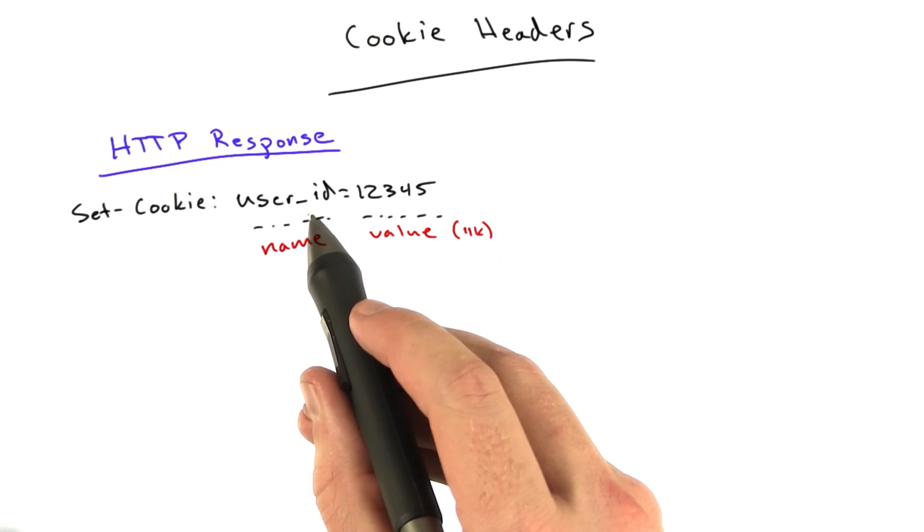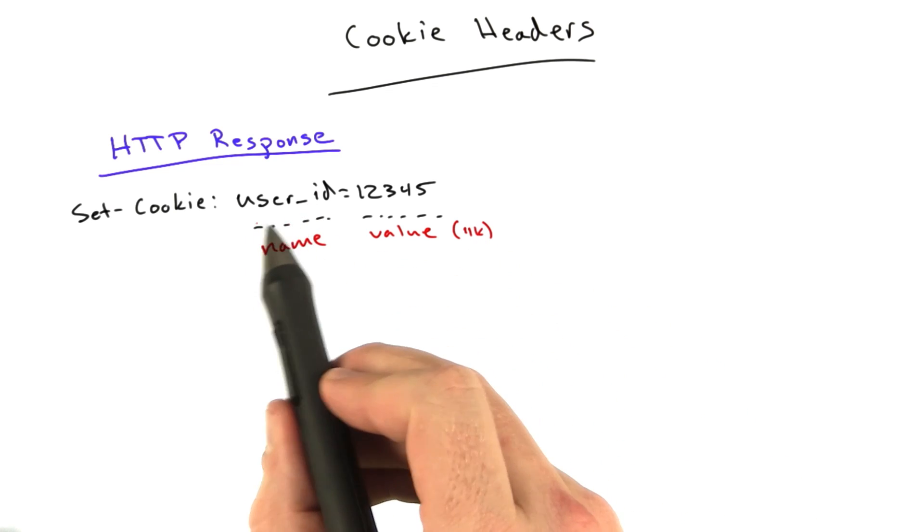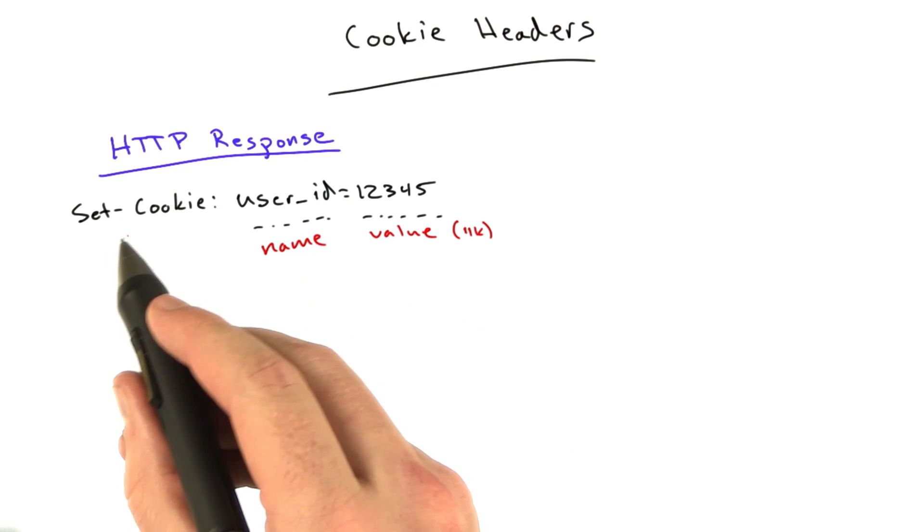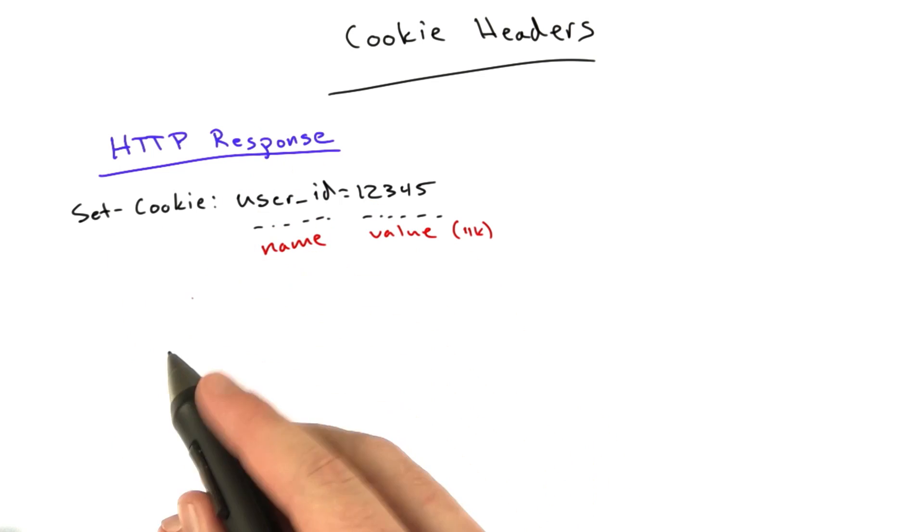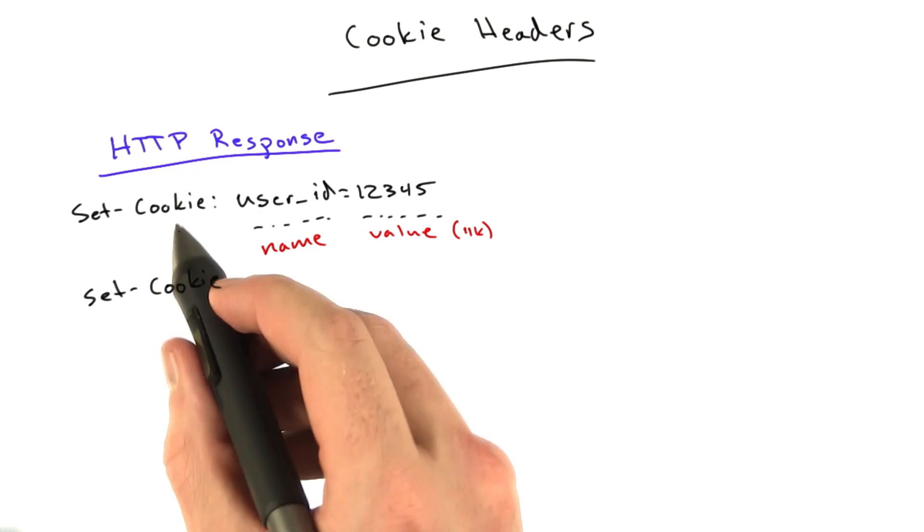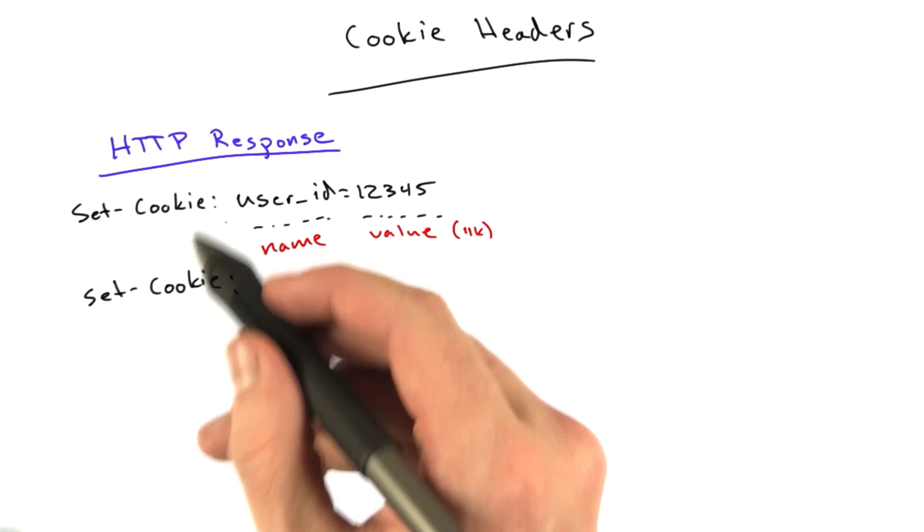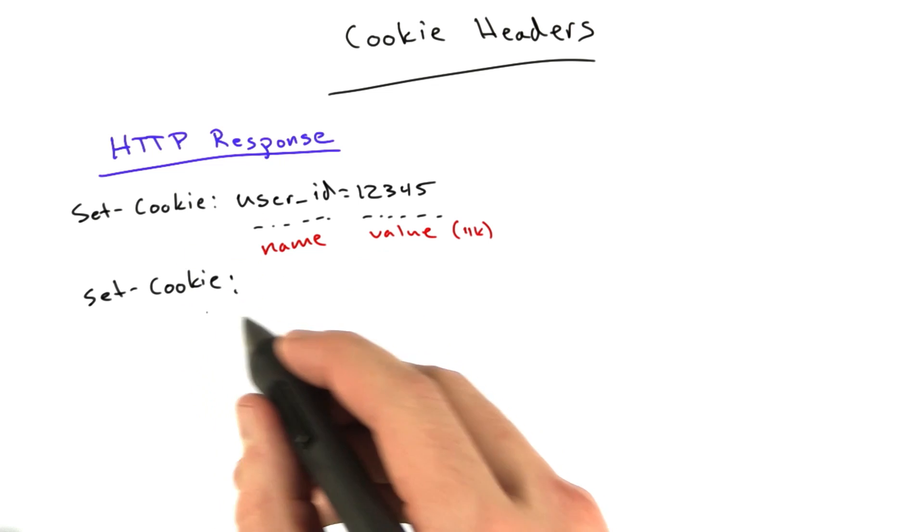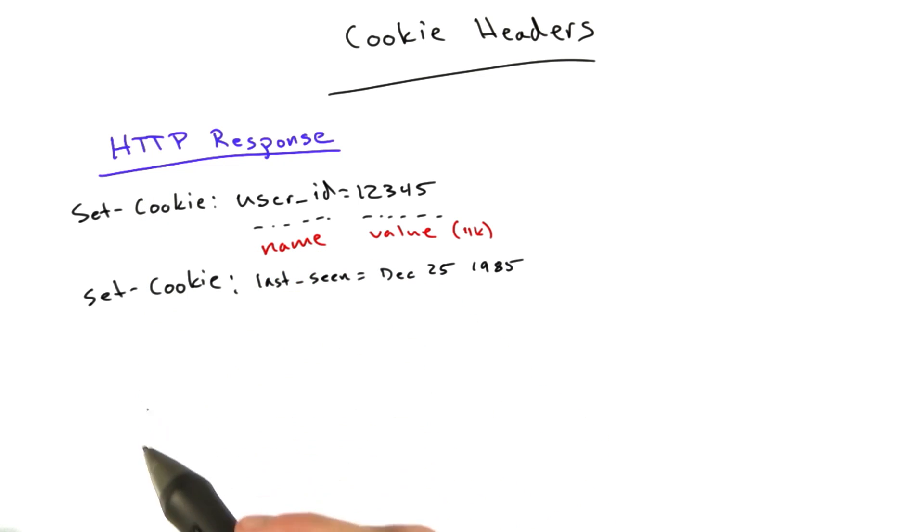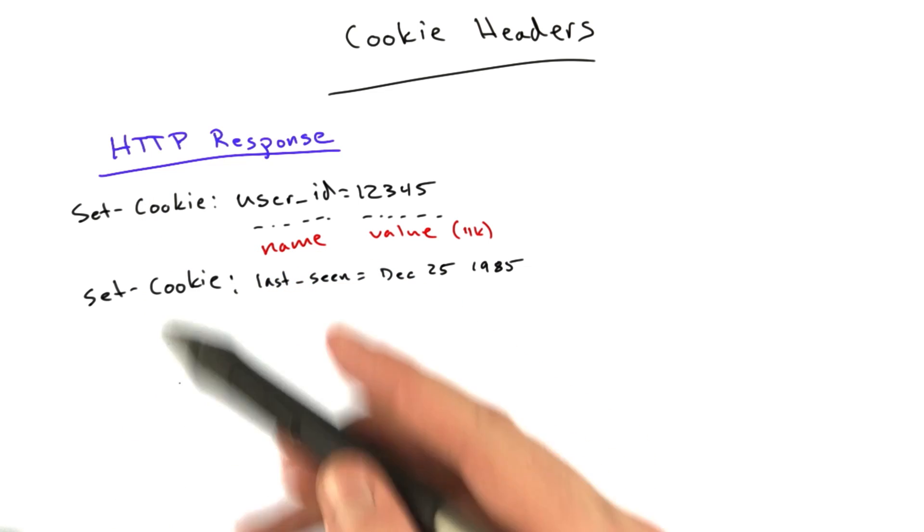Honestly, I don't know if there's a limit to how big the name can be. Generally, this is very, very short. If the server wants to send multiple cookies, it can do so by using multiple set-cookie headers. There is no restriction that says headers have to be unique. A server can send as many cookies as it wants. It's up to the browser to decide whether or not to store them.